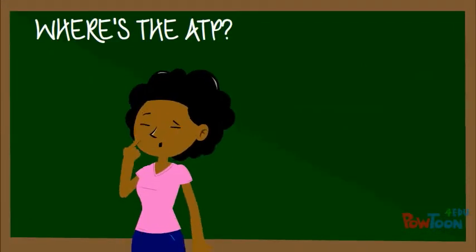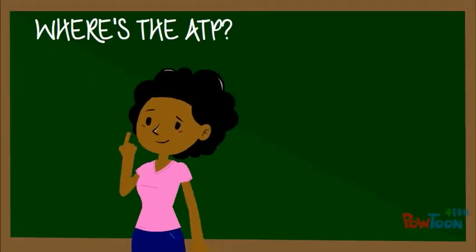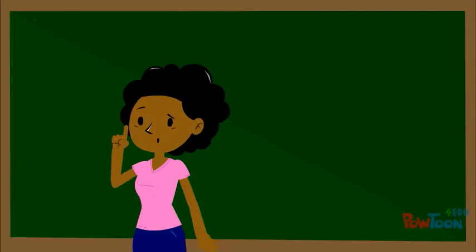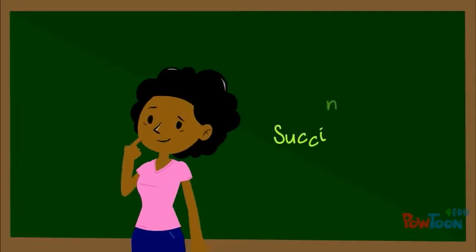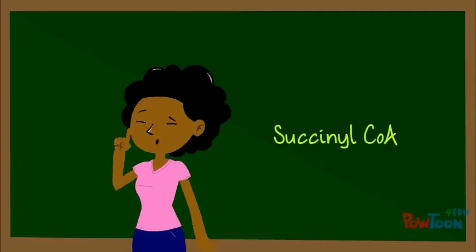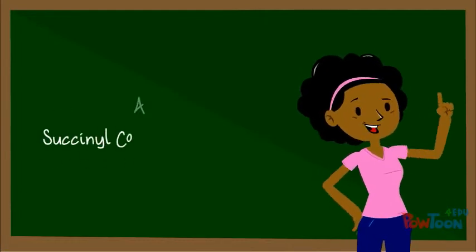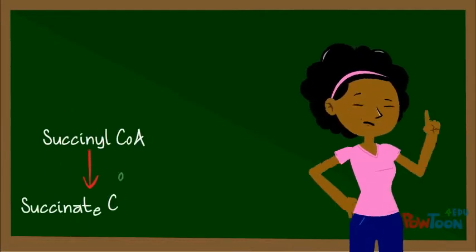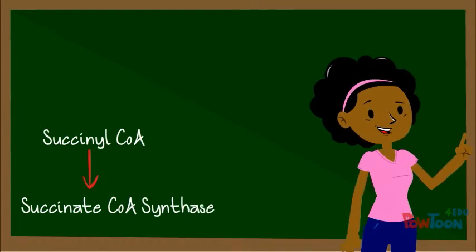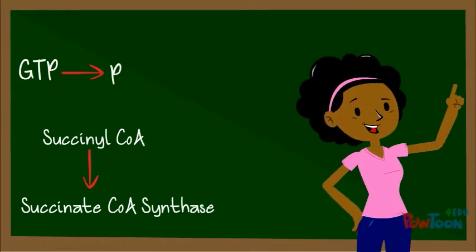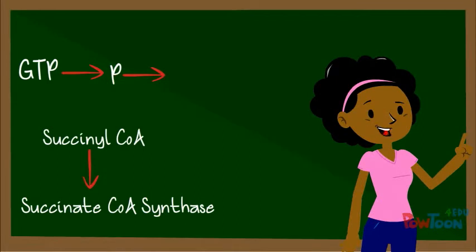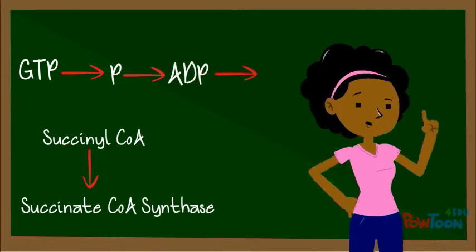There is one ATP produced through the Krebs cycle by succinyl-CoA. Succinyl-CoA uses succinate-CoA synthase to move 1 phosphate from guanosine triphosphate to adenosine diphosphate to produce adenosine triphosphate.